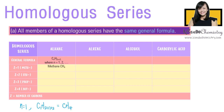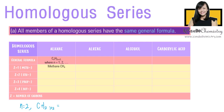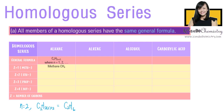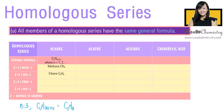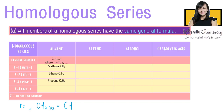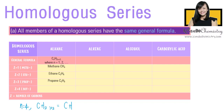The second member is ethane, where N equals 2, hence the formula is C2H6. The third member is propane, N equals 3, hence the formula is C3H8. The fourth member is butane, N is 4, hence the formula is C4H10.